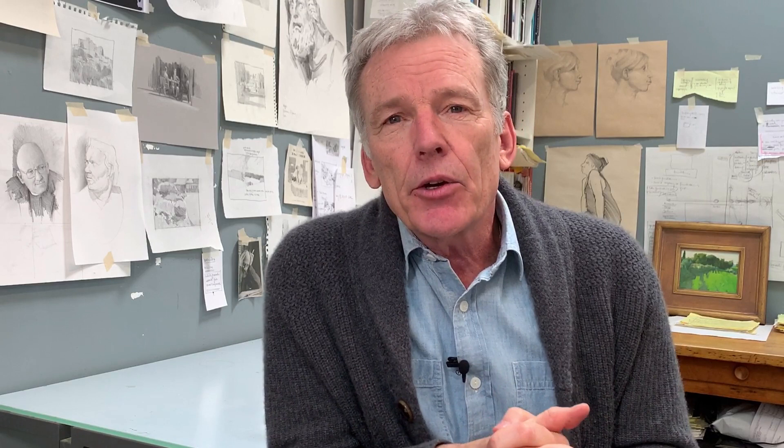Those flat value masses make up the foundation of our painting and they intersect with the design-driven image. I'm looking at composition foundationally as structure underlying the image — a design-driven image using value masses and cropping. If you're normally thinking in terms of subject matter and color, this may seem strange, but this really is the foundation of how to build more solid paintings. Subject matter and color fit into this but have to be supported by this foundation.